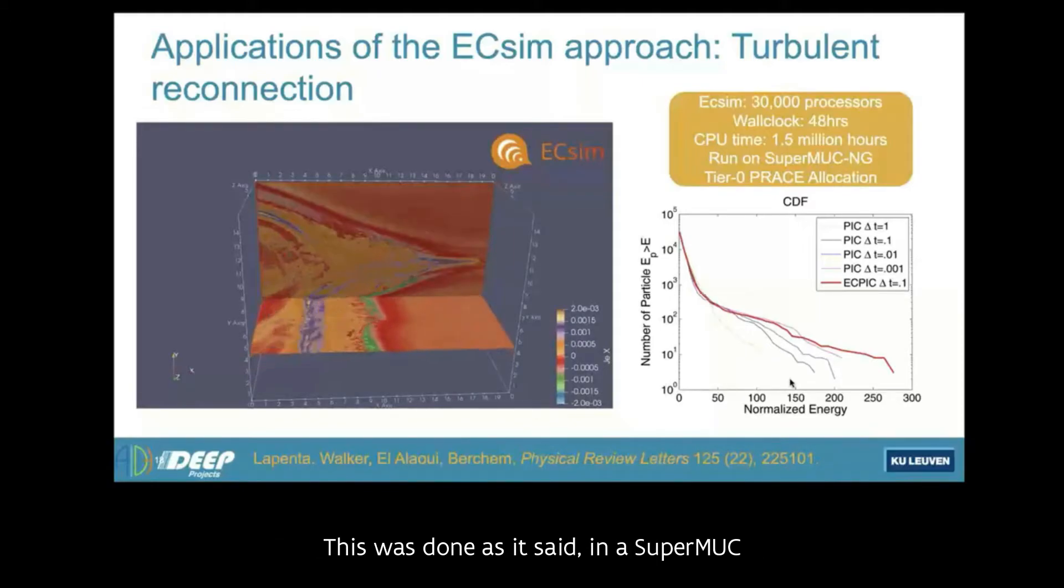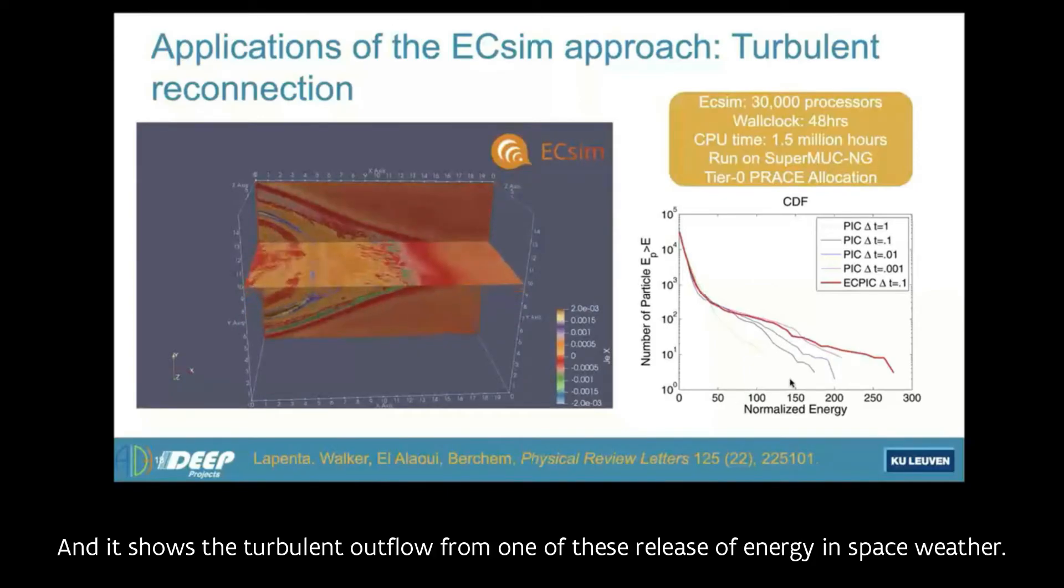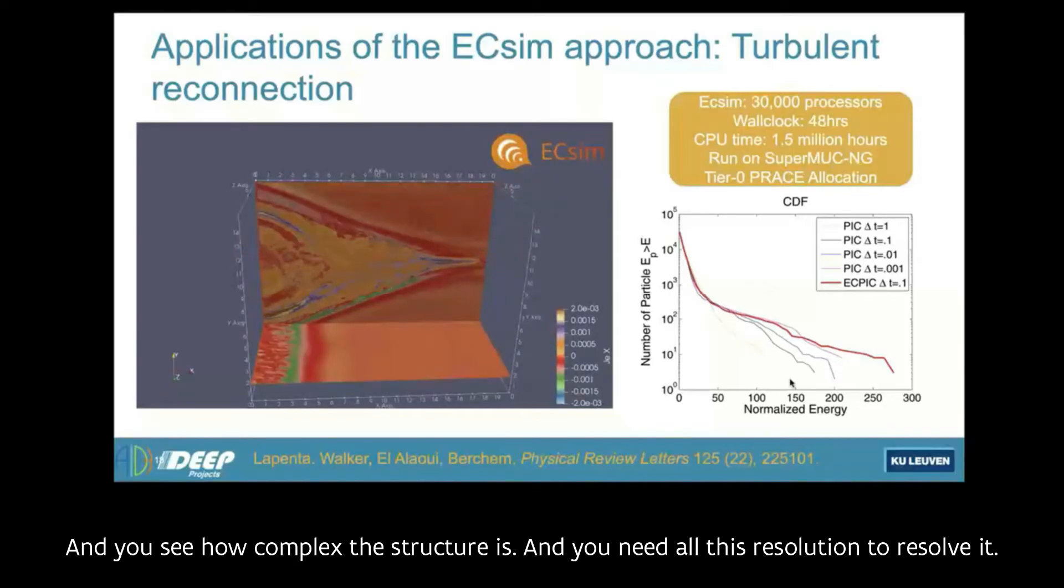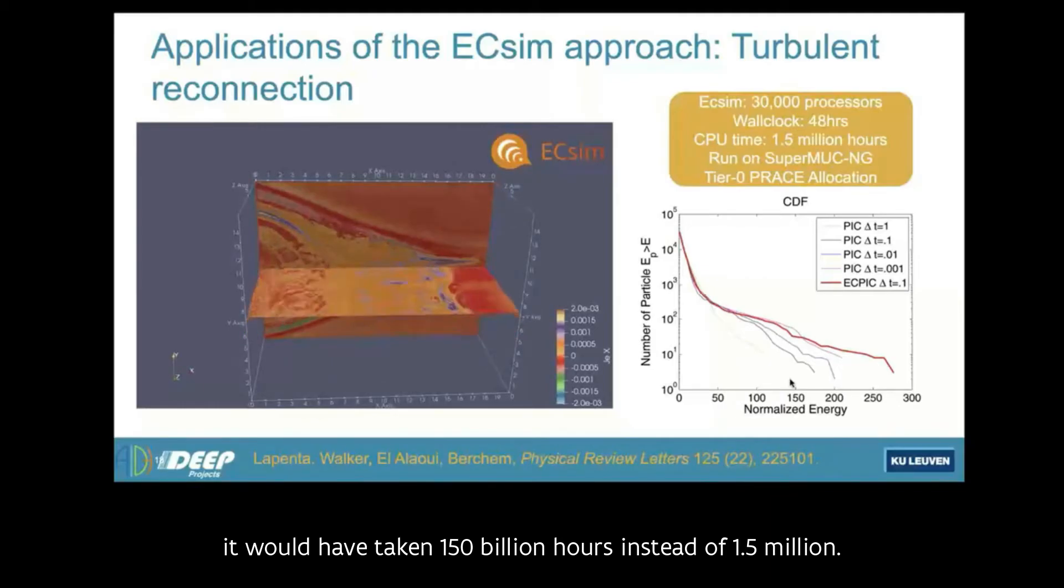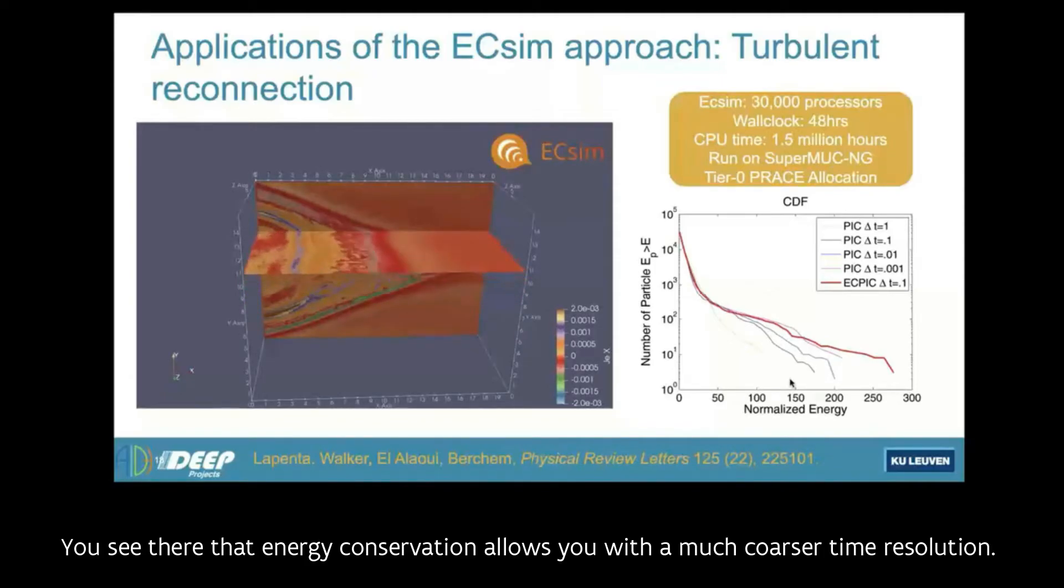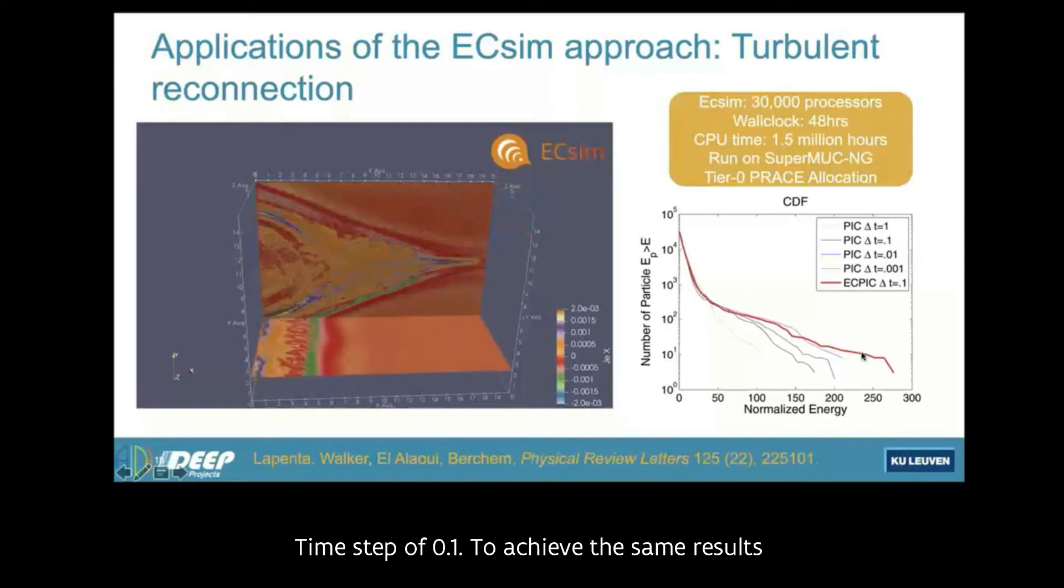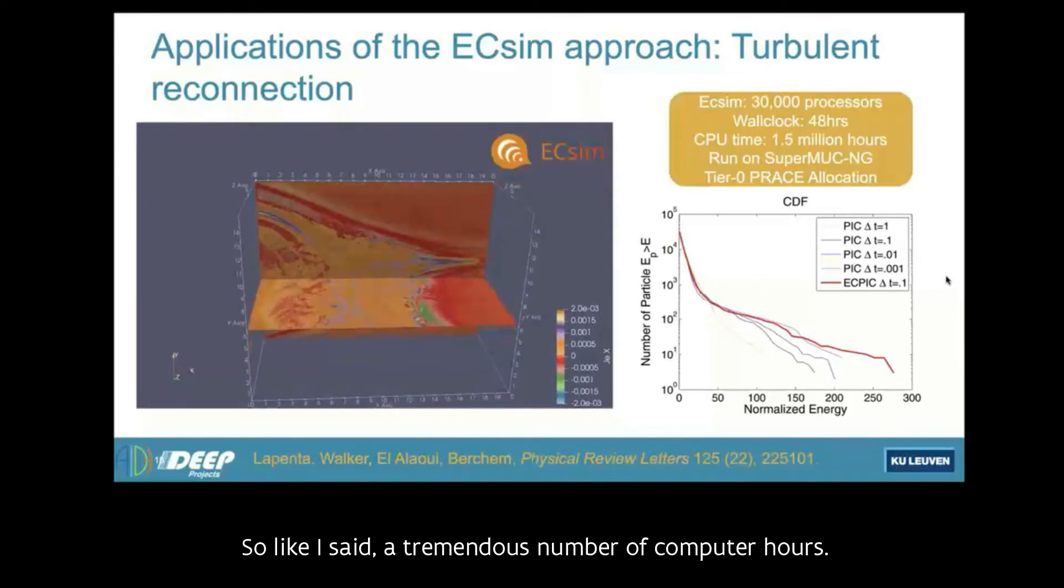This was done at SuperMUC in a previous tier zero price application that we had last year. And it shows the turbulent outflow from one of these release of energy in space weather, and you see how complex the structure is, and you need all this resolution to resolve it. But you don't need more resolution than that. If you had done this with the explicit method, like I said, it would have taken 150 billion hours instead of 1.5 million. You see there that energy conservation allows you with a much coarser time resolution, time step of 0.1, to achieve the same results that you would have gotten in an explicit method using 100 times more resolution. So a tremendous number of computer hours.